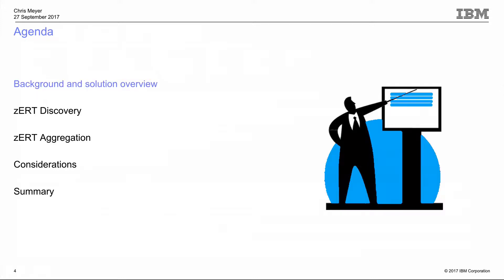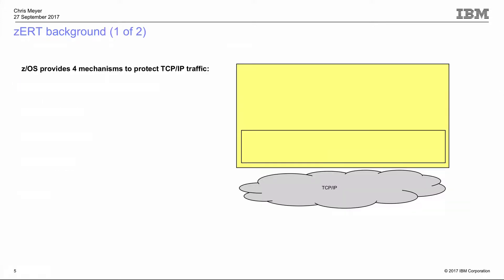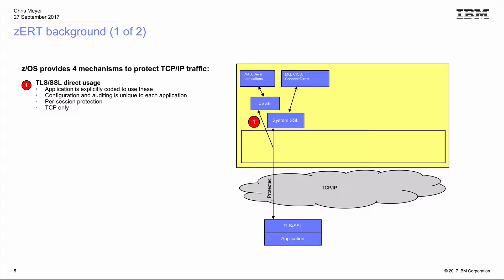zERT is all about cryptographic protection of your network traffic into and out of your z/OS systems. It doesn't provide encryption itself — we already have quite a bit of capability on the platform to provide cryptographic protection on z/OS for TCP/IP traffic. We support four mechanisms, the first being TLS (Transport Layer Security), the modern incarnation of Secure Sockets Layer.